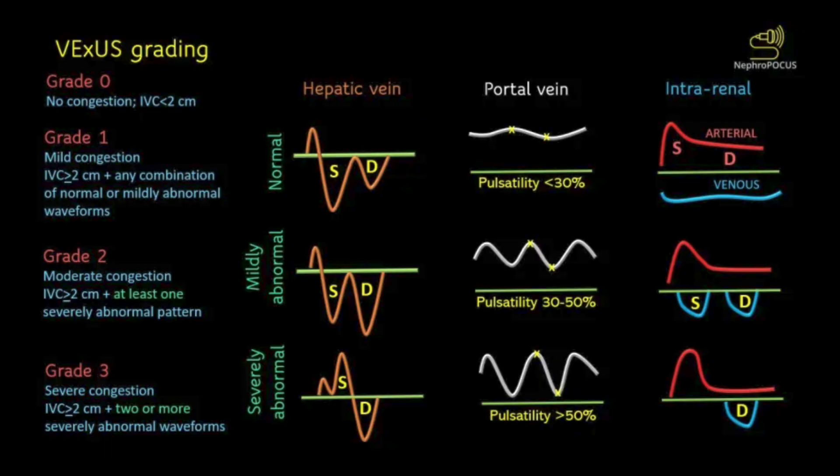Combining all gradings from the IVC, hepatic vein, portal vein, and intrarenal vein, you obtain the VEXUS grade. Grade 0: no congestion, IVC less than 2 cm. Grade 1: IVC greater than or equal to 2 cm with any combination of normal or mildly abnormal waveforms. Grade 2: moderate congestion, IVC greater than or equal to 2 cm with at least one severely abnormal waveform pattern. Grade 3: severe congestion, IVC greater than or equal to 2 cm with two or more severely abnormal waveforms.